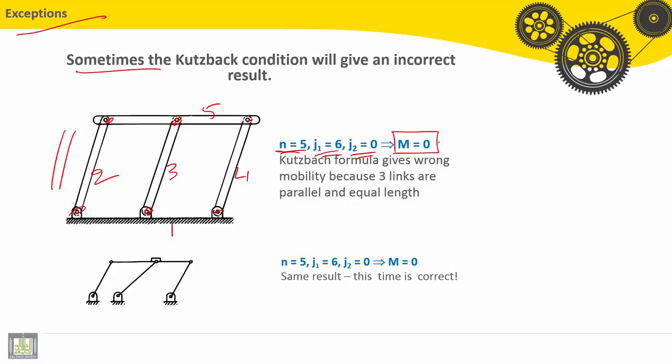If we calculate M, we find M equals zero. Normally it should be a structure with no motion according to M equals zero, no mobility. However, Kutzbach formula gives wrong mobility because three links are parallel and equal in length.